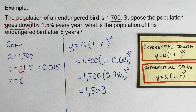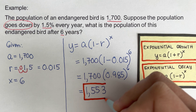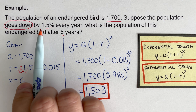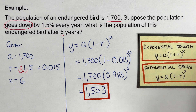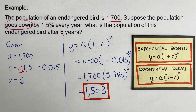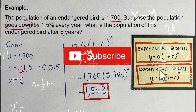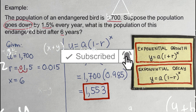So 1,553 birds will be the population after six years, provided the rate of decay remains a constant 1.5% every year. Did you get the same answer? Good — perfect! If you found this video helpful, hit like and subscribe for more math videos.